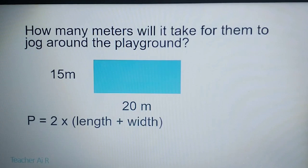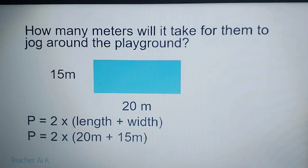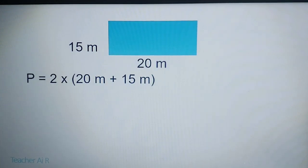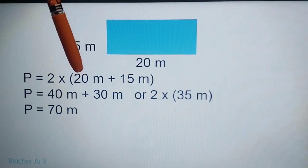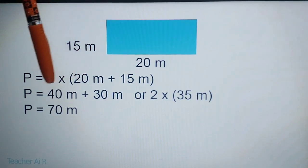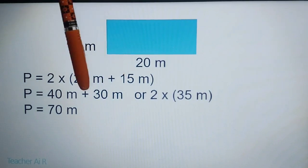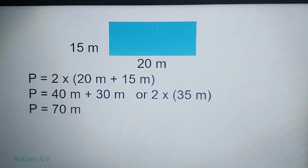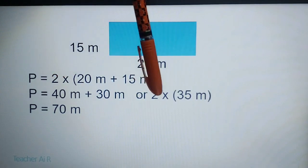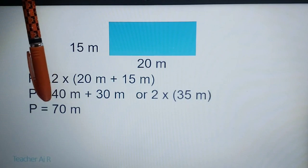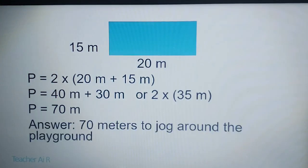So P equals 2 times length plus width. The length is 20 and the width is 15. So P equals 2 times 20 M plus 15 M. Multiply 2 by 20, which gives 40, and 2 by 15, which gives 30. Or, you could add first: 20 plus 15 equals 35, then multiply by 2. Either way, the answer is 70 meters to jog around the playground.